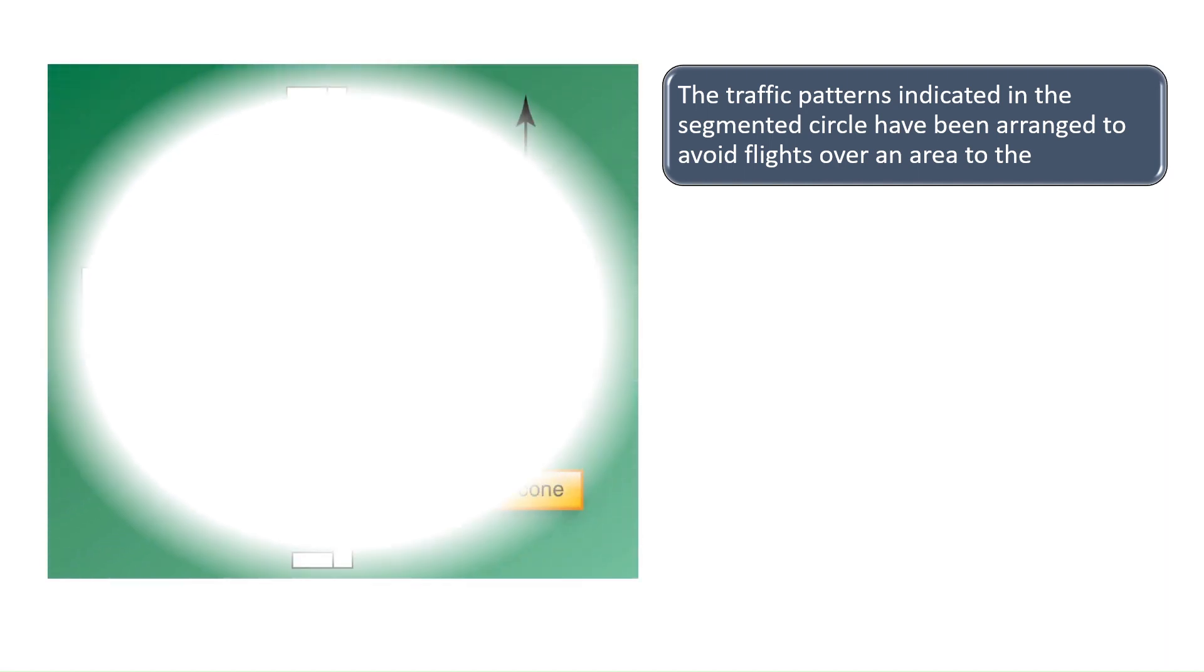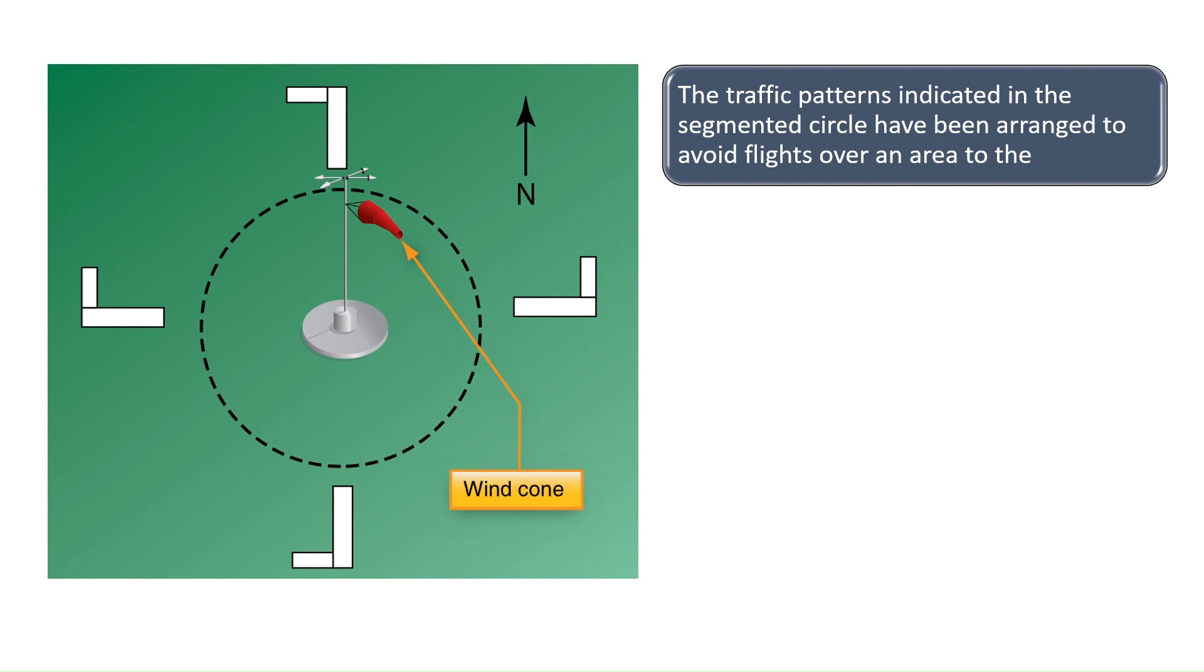The traffic patterns indicated in the segmented circle have been arranged to avoid flights over an area to the. The traffic patterns are illustrated by the arrows in the chart to the left. The traffic pattern for landing on runway 1-8 is right and there would be a right-hand traffic pattern for landing on runway 2-7.